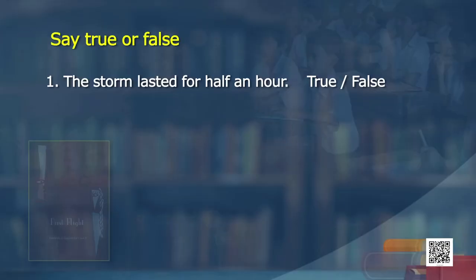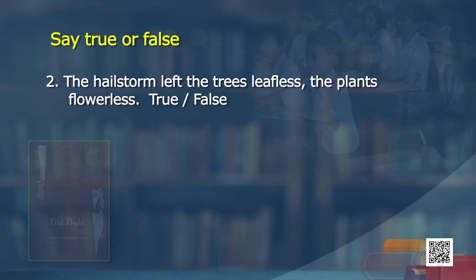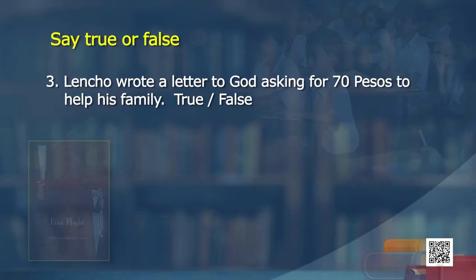Let us test how far we have understood the story. Here are some true or false statements. The storm lasted for an hour — false, it was half an hour. The hailstorm left the trees leafless and the plants flowerless — true, completely devastated. Lencho wrote a letter to God asking for 70 pesos — false, he was asking for 100 pesos. The fat postmaster wanted to play a joke on Lencho and make fun of him — false, because he never met him.